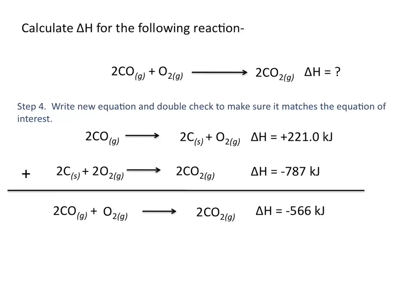The last thing to do is double check that this equation matches the equation of interest — in this case it does. So the delta H value for 2 CO plus O2 going to 2 CO2 is negative 566 kilojoules per mole.